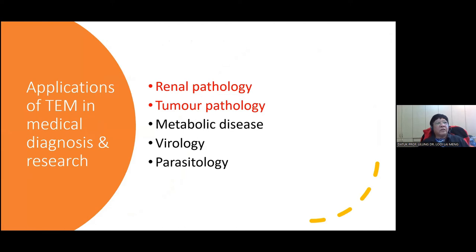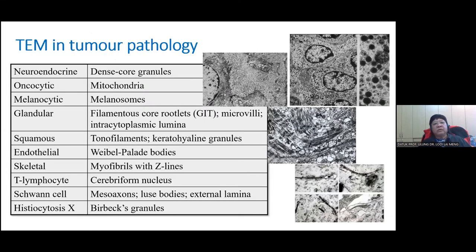The applications of transmission electron microscopy — I'm going to limit it to transmission — are in many areas of medical diagnosis and research. What most of us are familiar with would be renal, tumour, metabolic disease, virology, and parasitology. I'm going to focus on renal and tumour pathology. I'll start off with tumour before going into the main focus, which is renal. Transmission electron microscopy and tumour pathology was very well established, particularly in the days before immunohistochemistry and other new ancillary diagnostic techniques came in.